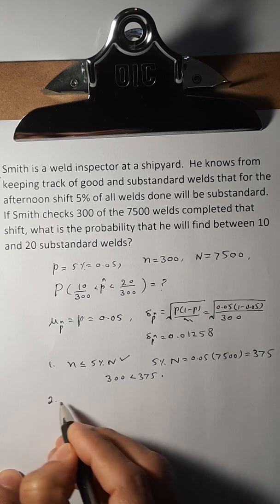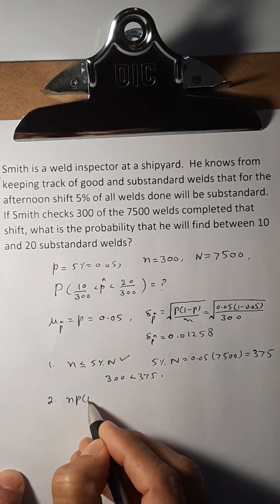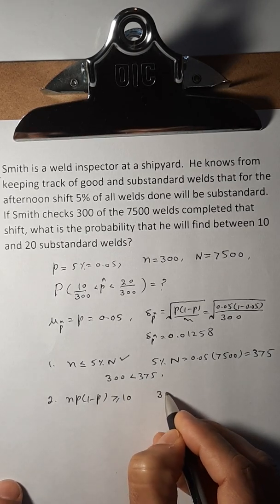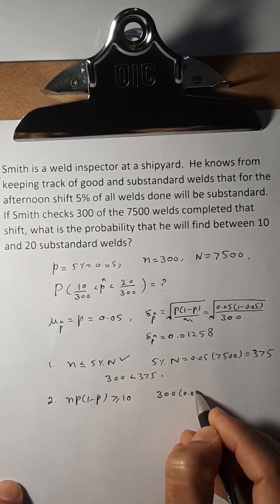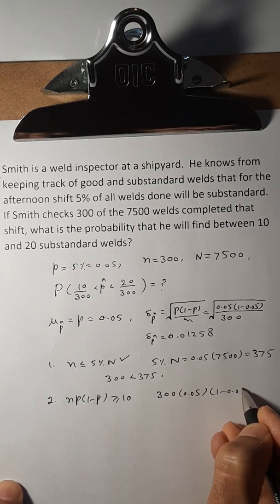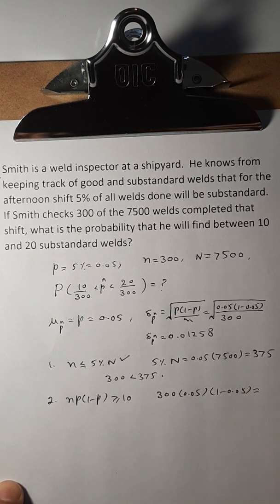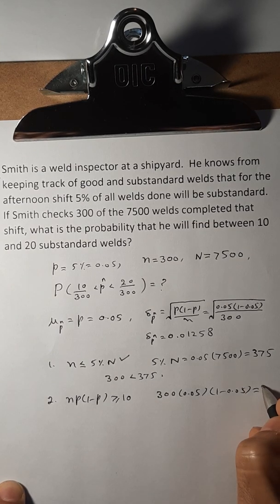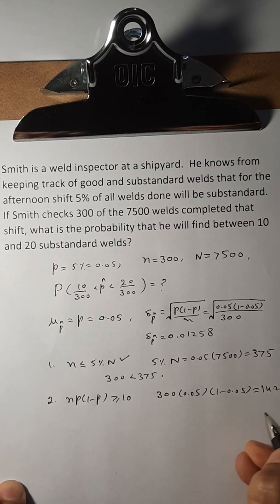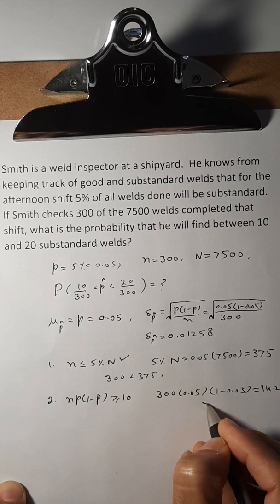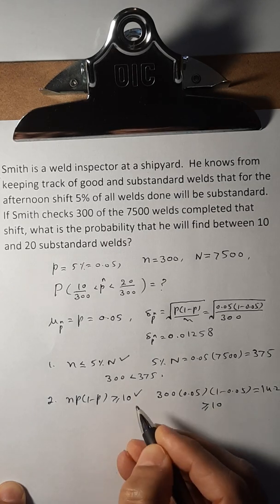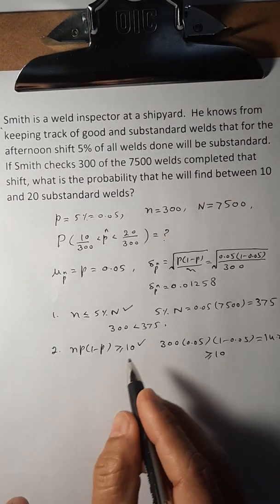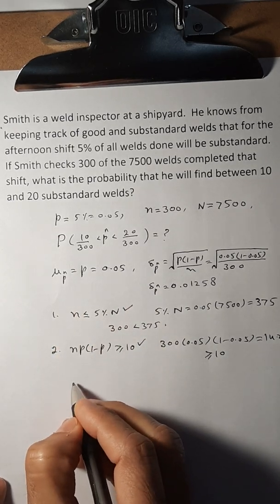Second, we have to check that n times P times 1 minus P is greater than or equal to 10. In this case, n is 300 times P, which is 0.05, times 1 minus 0.05, and this turns out to be 14.25, which is definitely greater than 10. So this condition is true too. With these two conditions true, it means that the sampling distribution is approximately normal.